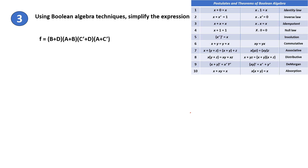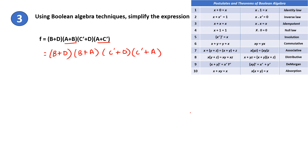Problem 3. Let's start solving this. First write B plus D. Then take this term and apply the commutative law, so A plus B becomes B plus A, and C' plus D. Then again apply the commutative law to this, so this becomes C' plus A. Next take these two terms and apply the distributive law.